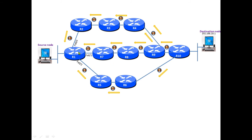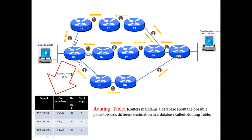The router stores this path information in its database, which is called the routing table. In the routing table, the router holds information about which paths are available to reach a given subnet. A routing table is a database maintained by routers about the possible paths towards the destination.